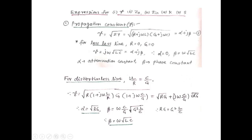For a distortionless line, L/R = C/G. Therefore γ = √[(R + jωL)(G + jωC)]. Taking R outside the first term gives (1 + jωL/R), and G outside the second gives (1 + jωC/G). Substituting L/R = C/G, we get α = √(RG) and β = ω√(LC).